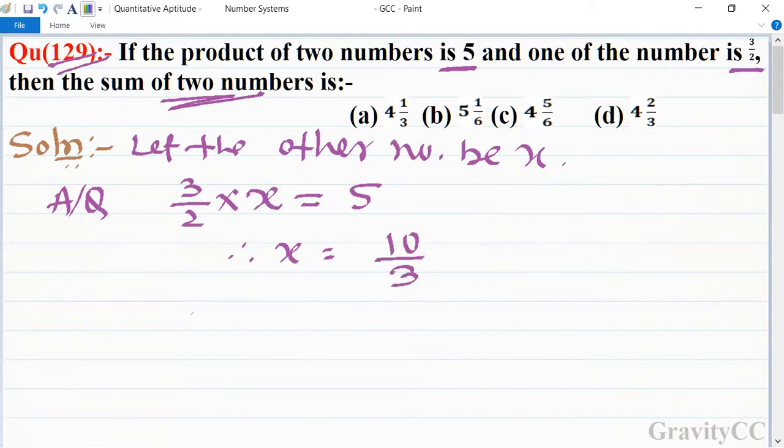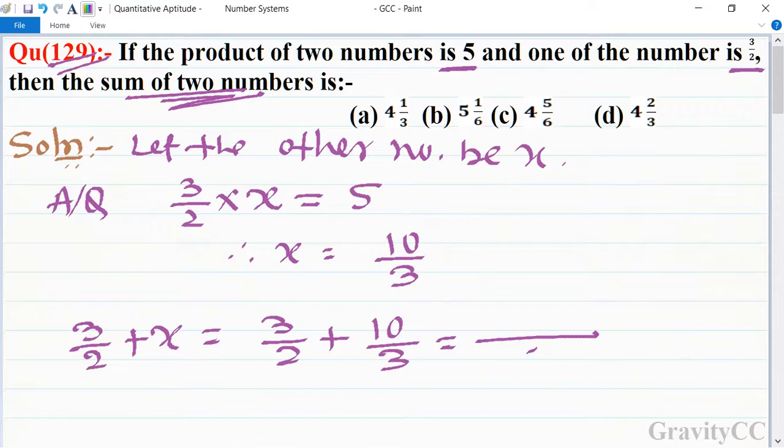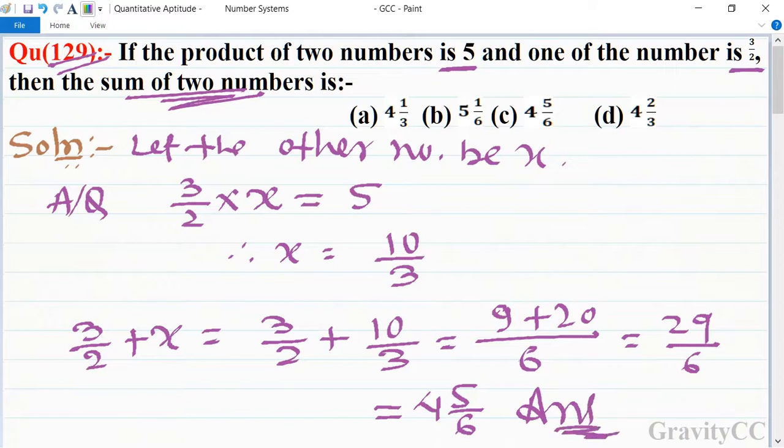Sum of two numbers means 3 upon 2 plus x is equal to 3 upon 2 plus 10 upon 3. So is equal to, its LCM is 6, and 9 plus 20, so is equal to 29 upon 6. So is equal to 4 whole number 5 upon 6, which is the required answer.